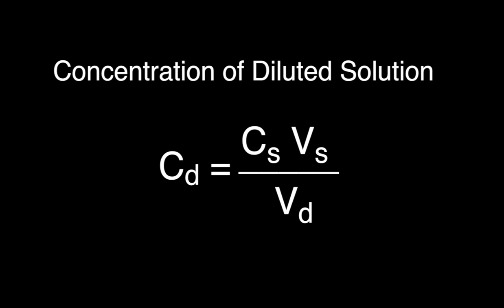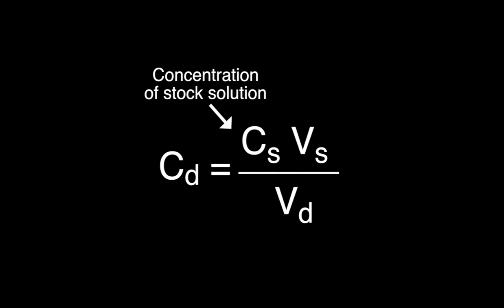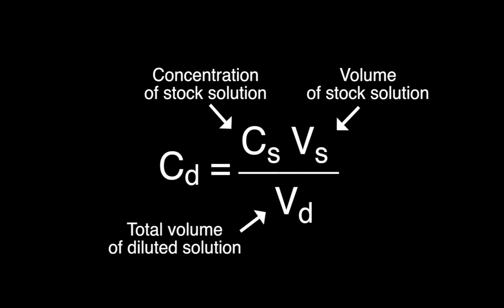To determine the concentration of each solution, you can use the following equation: Cd = (Cs × Vs) / Vd, where Cs is the concentration of the stock solution, Vs is the volume of the stock solution, and Vd is the total volume of the diluted solution.